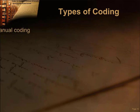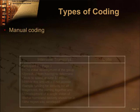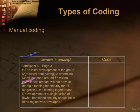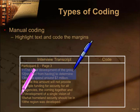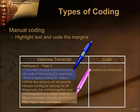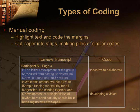For manual coding, you'll need a set of colored markers. Take the transcript or other written record of text and begin highlighting the text and writing codes in the margins. Once you have the text coded, you'll cut the paper into strips, combining codes into like piles. Be sure to identify the sources of the text so you can go back to the original transcript if needed.